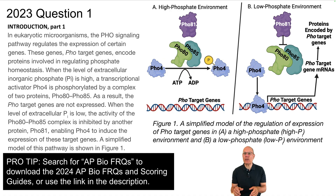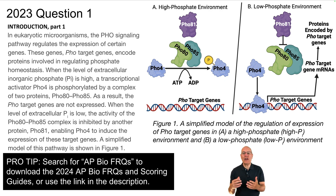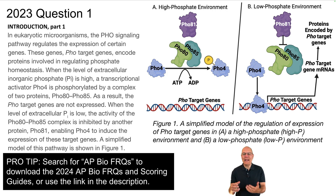In eukaryotic microorganisms, the FOX signaling pathway regulates the expression of certain genes. These FOX target genes encode proteins involved in regulating phosphate homeostasis. When the level of extracellular inorganic phosphate, PI, is high, a transcriptional activator, FOX4, is phosphorylated by a complex of two proteins, FOX80 and FOX85. As a result, the FOX target genes are not expressed. When PI is low, the activity of the FOX80/FOX85 complex is inhibited by another protein, FOX81, enabling FOX4 to induce the expression of these target genes.